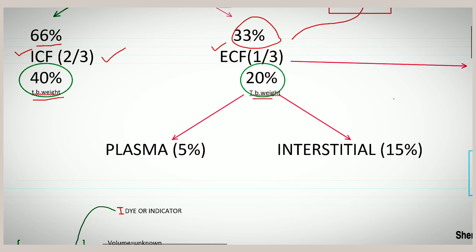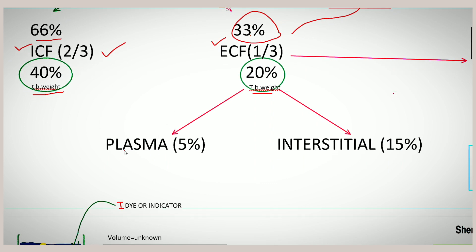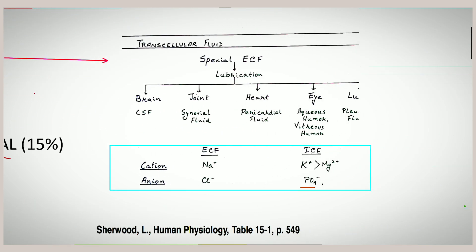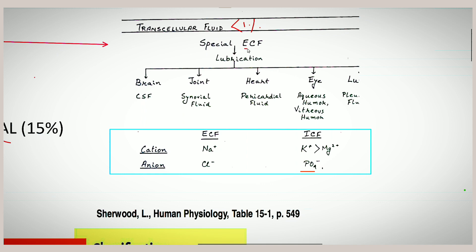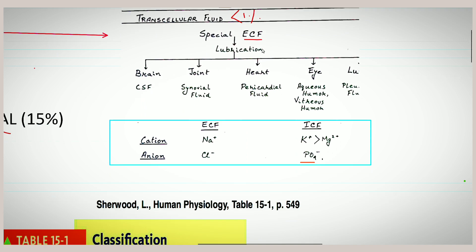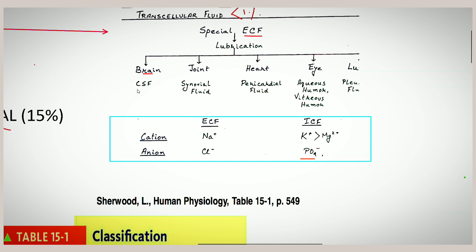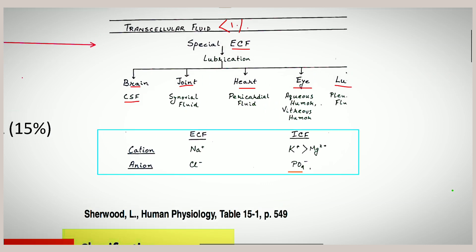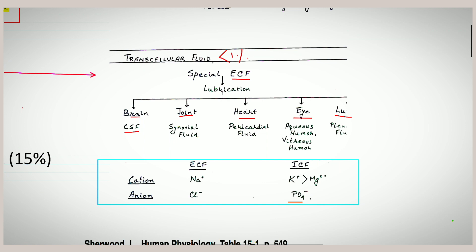ECF is divided into two parts: plasma, which is 5 percent, and interstitial fluid, which is 15 percent. One more classification is transcellular fluid, which is less than 1 percent and hence negligible. Transcellular fluids are special ECF fluids contained in specific spaces — for example, CSF in the brain, synovial fluid in joints, pericardial fluid in the heart, aqueous and vitreous humor in the eyes, and pleural fluid in the lungs.